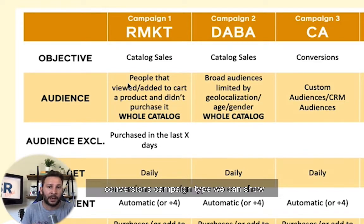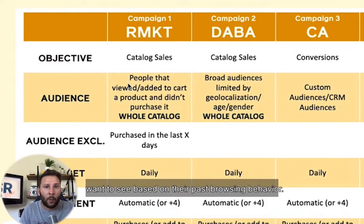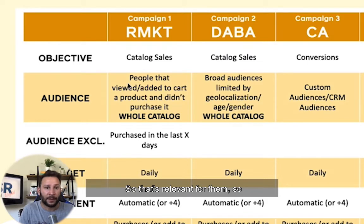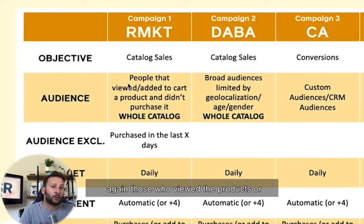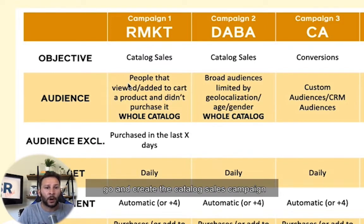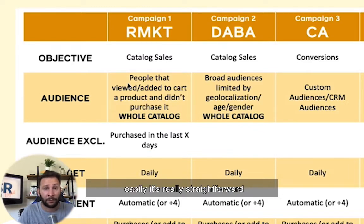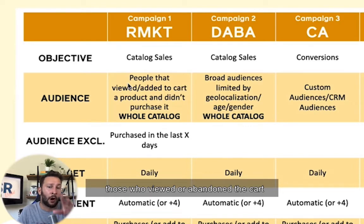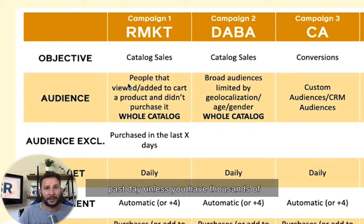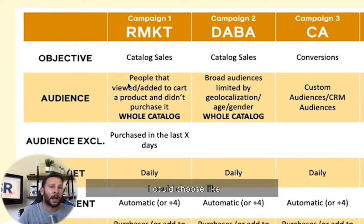With a conversions campaign type, we can show them what we want to show them. But in this case, we are going to show them what they want to see based on their past browsing behavior, so that's relevant for them. What they propose is that we target those who viewed the products or added the products to cart. When you go and create the catalog sales campaign type, you can actually choose really easily — it's really straightforward — those who viewed or abandoned the cart for the last 14 or 30 days.